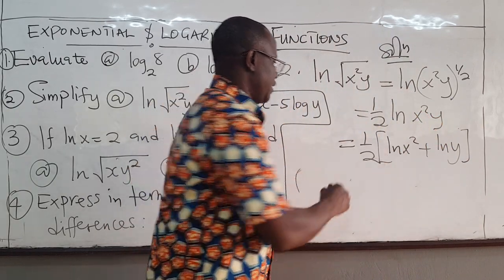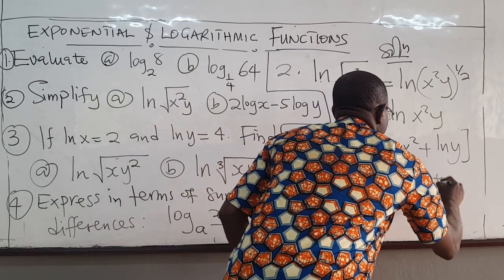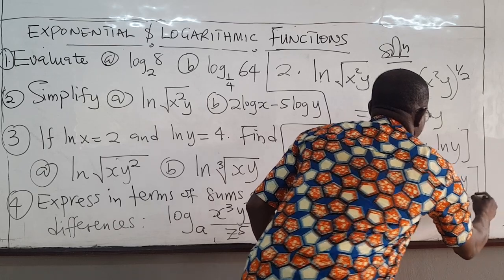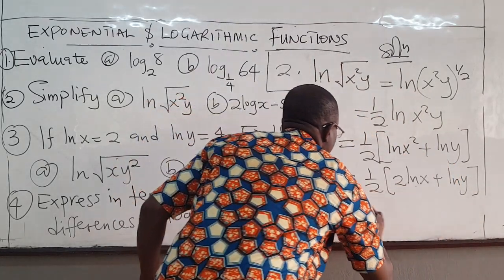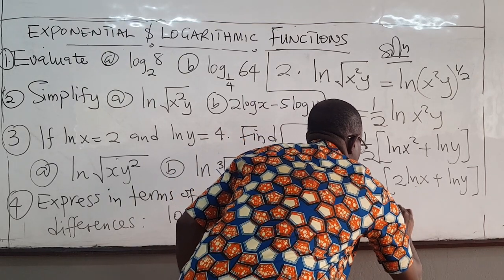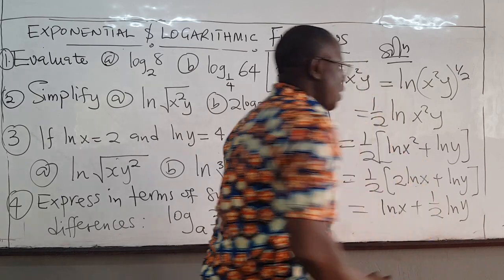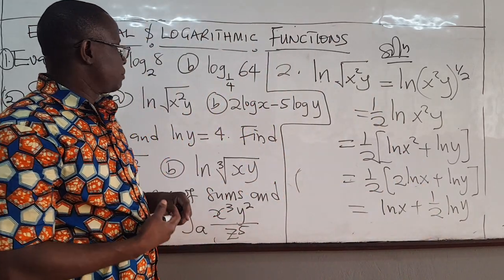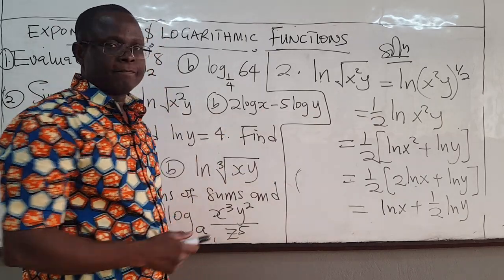Ln y is fine, but this we can rewrite, right? We can bring the 2 down here. So this is going to be 1/2 times 2 ln x plus ln y. You can multiply 1/2 by 2, you get ln x plus 1/2 ln y. Okay? So that is how you can rewrite this.